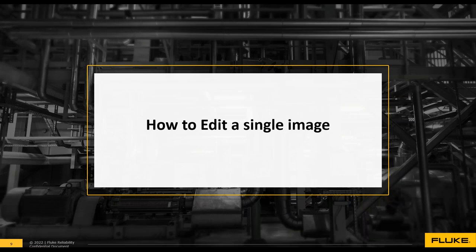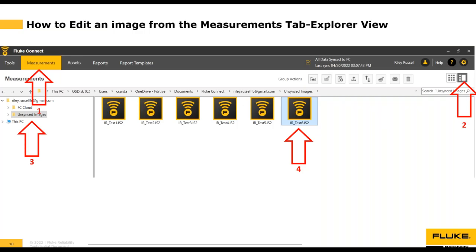Next I will provide a high-level overview of how to edit an image, then cover each editing option in more detail. Before jumping into how to edit an image, there is one important piece of information to understand about Fluke Connect Desktop: the difference between synced and unsynced files. Synced files will be synced with your Fluke Connect cloud account and will be visible in the web app and the mobile app.